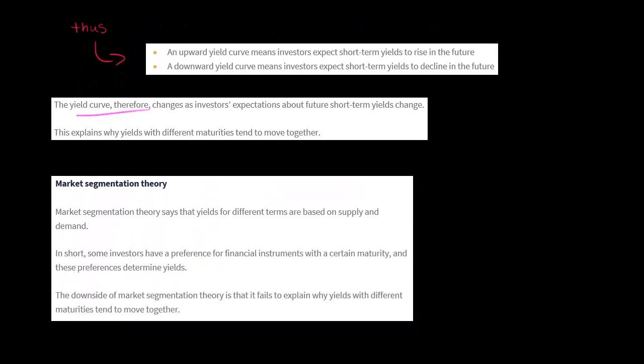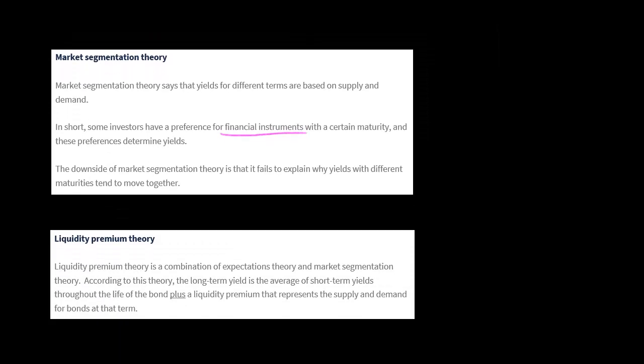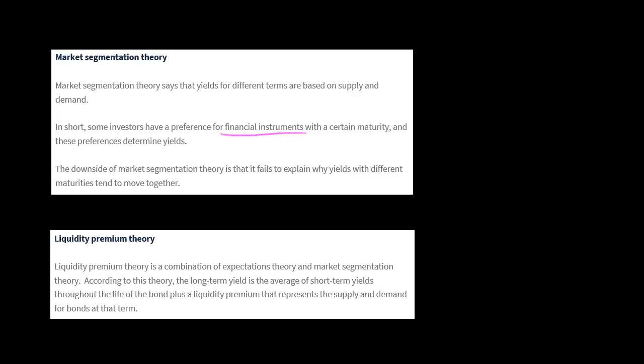Market segmentation theory says, leave aside the stuff about averages. Long-term yields are not simply the average of short-term yields over that time horizon — it's all about supply and demand. Investors will have a certain preference for certain types of financial instruments at a given point in time. It might be that right now investors have a strong preference for short-term instruments relative to long-term, or vice versa. One downside is that this doesn't explain why yields with different maturities tend to move together.